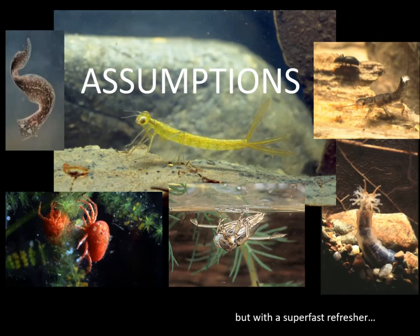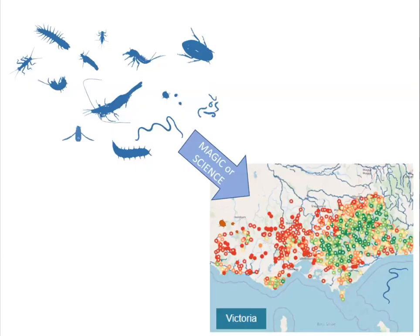This talk starts with a whole bunch of assumptions — one is that you're interested in this sort of stuff, the other is that you have at least a passing knowledge of some of the bugs and how we use them in environmental assessment. The pivotal tool we tend to use them in is the SIGNAL score. What I'll do at the beginning is walk through how we turn a list of bugs into a set of red and green dots. The red dots typically have a smaller list of more tolerant critters, whereas the green dots would have a big long list of awesome beasties — many of whom would die at the slightest sniff of pollutants, sedimentation, or other unpleasantness in their streams.